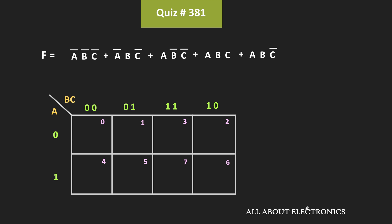If you see this expression f, it is given in the sum of product form, and here all the product terms are the minterms. That means this expression is in the canonical SOP form. So let us map all the minterms in the K-map. This cell represents ā·b̄·c̄, so let us put one in this cell. Similarly, ā·b·c̄ corresponds to this cell, a·b̄·c̄ corresponds to this cell, a·b·c corresponds to this cell, and a·b·c̄ corresponds to this cell. That means whatever minterms are present in the function, we will put a one in those cells.